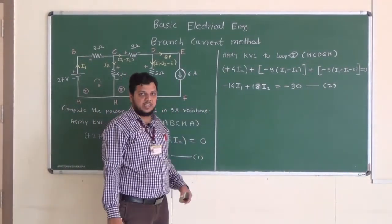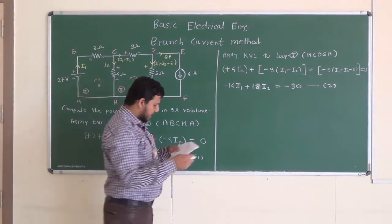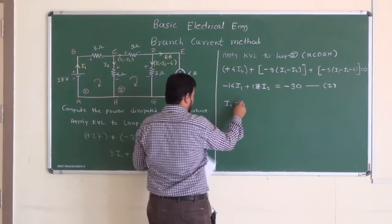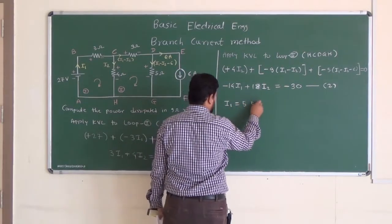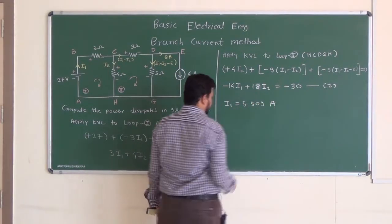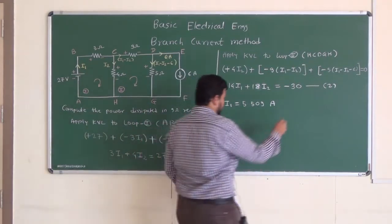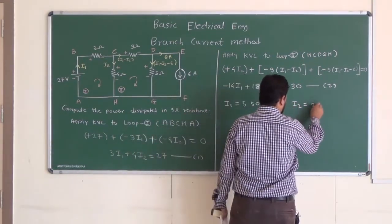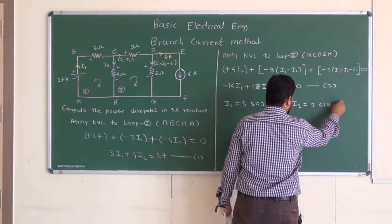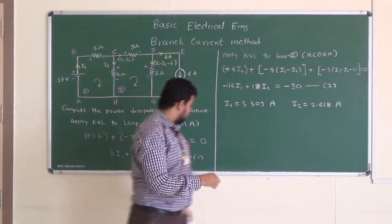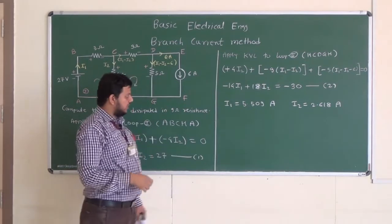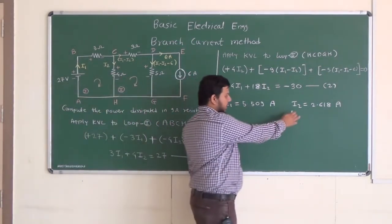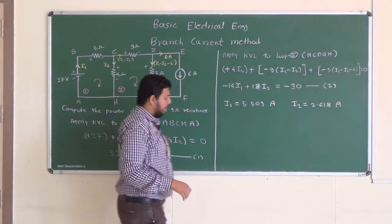Solving the two simultaneous equations — 3I1 + 4I2 = 27 and minus 14I1 + 18I2 = minus 30 — we get I1 = 5.509 ampere and I2 = 2.618 ampere.